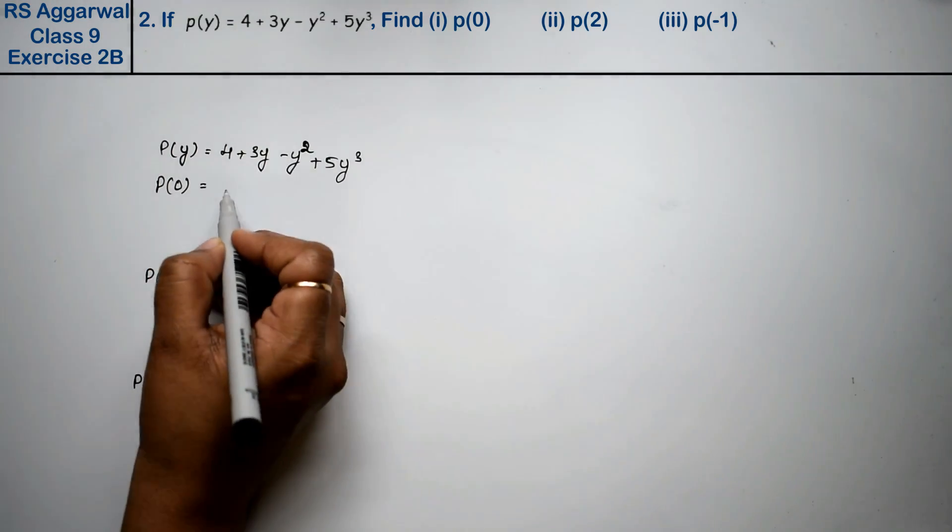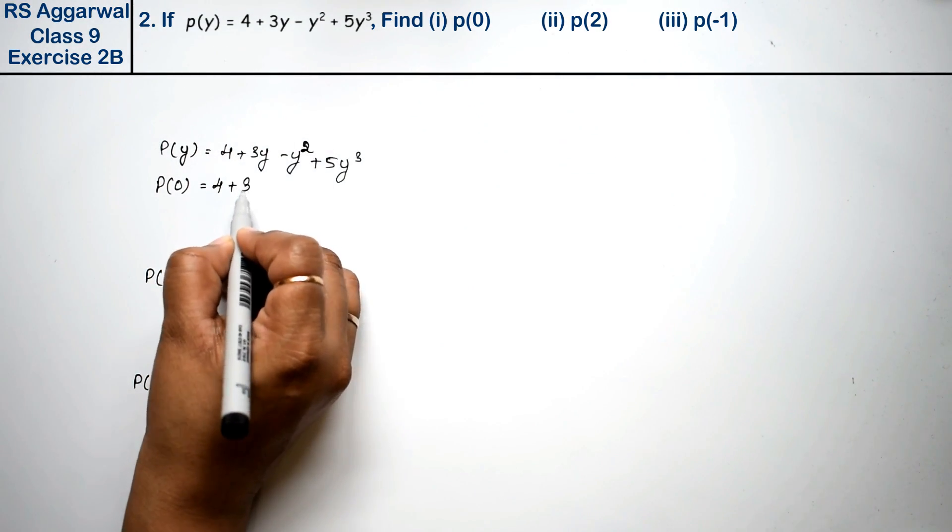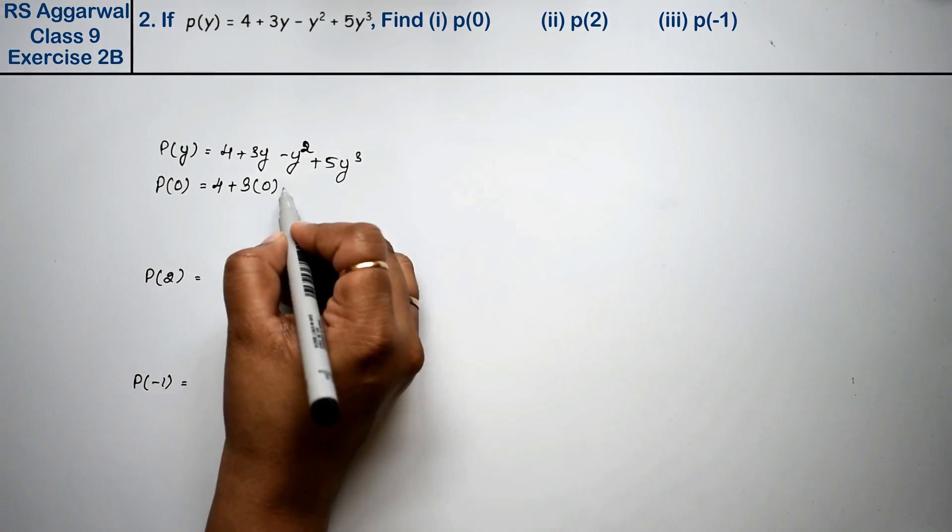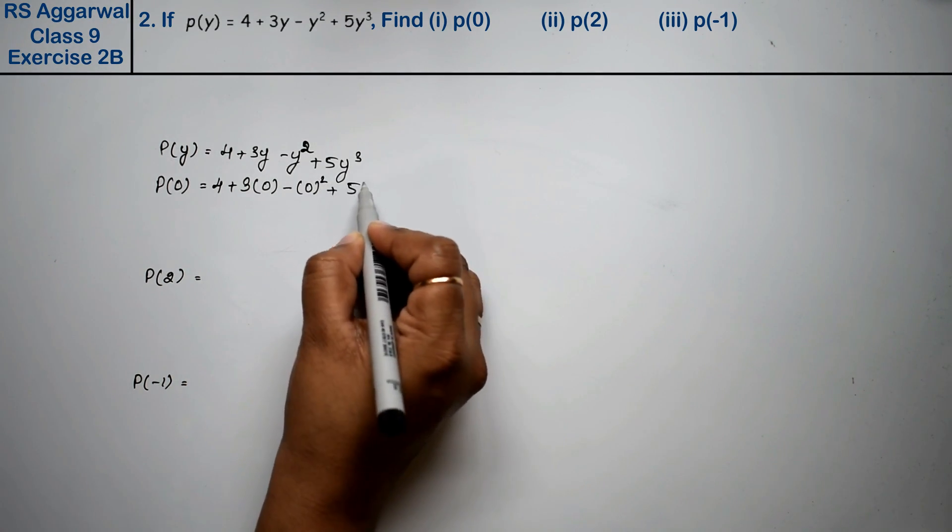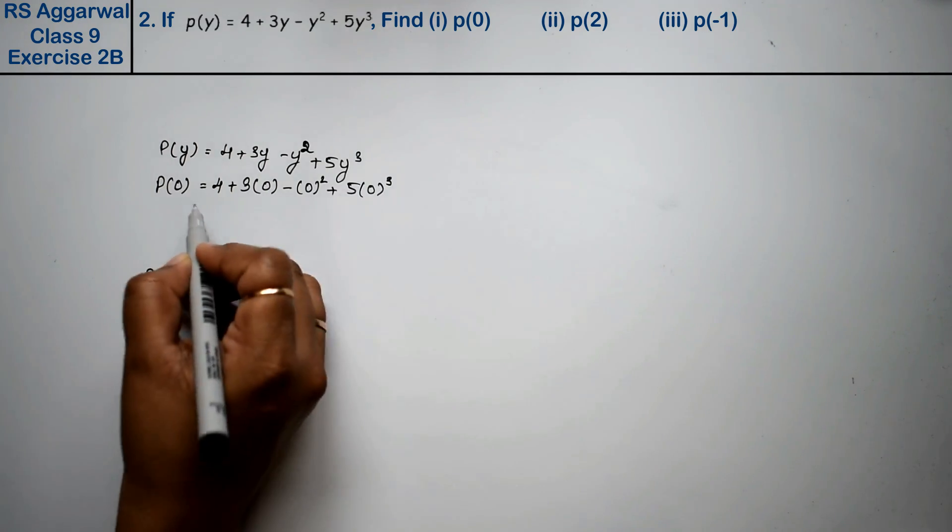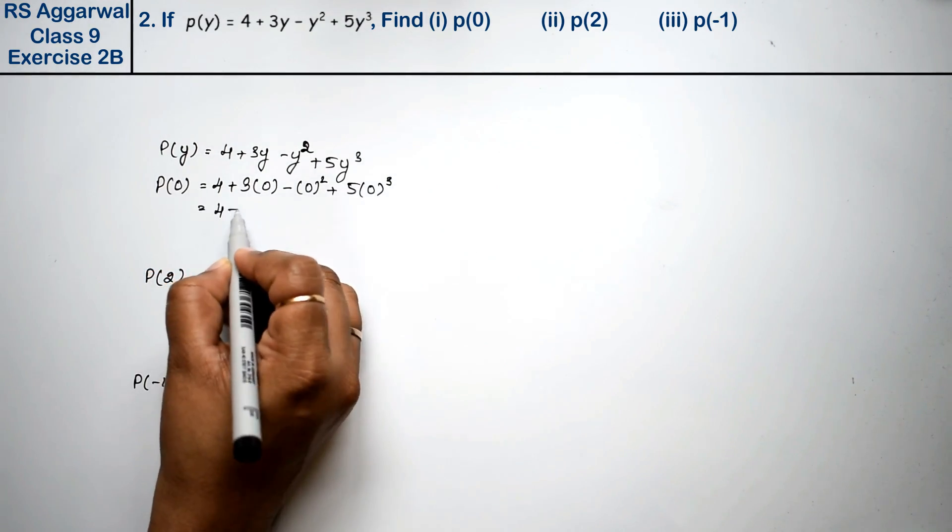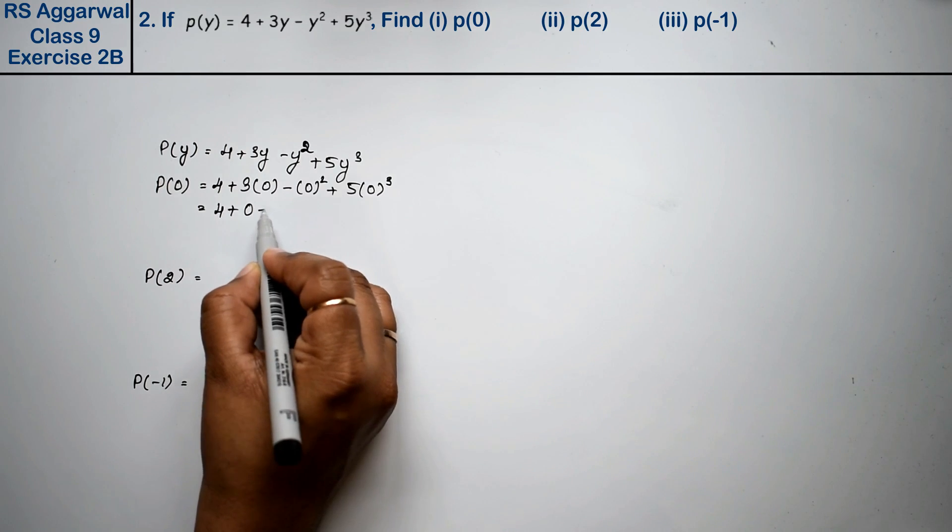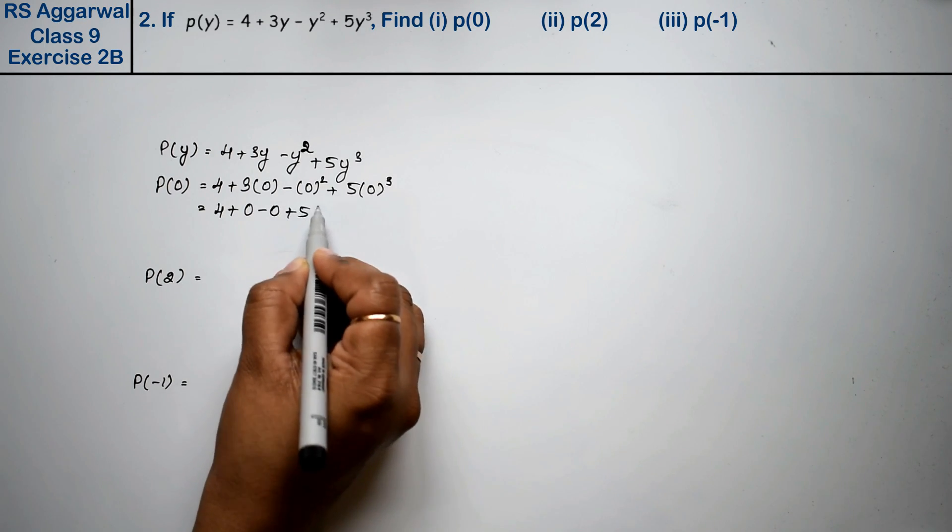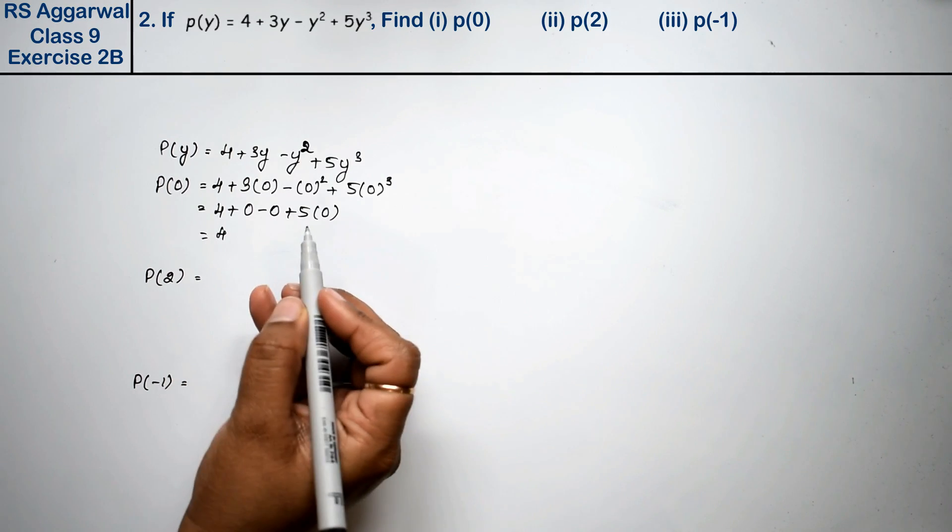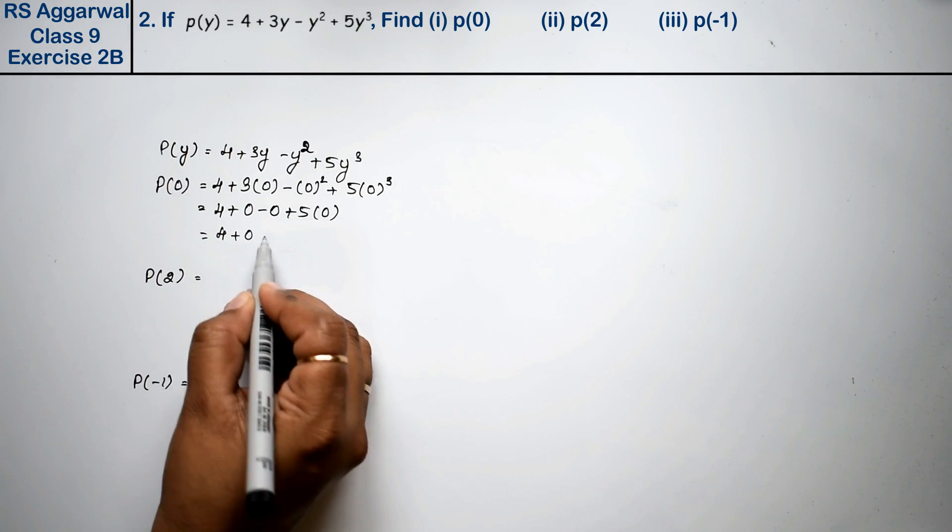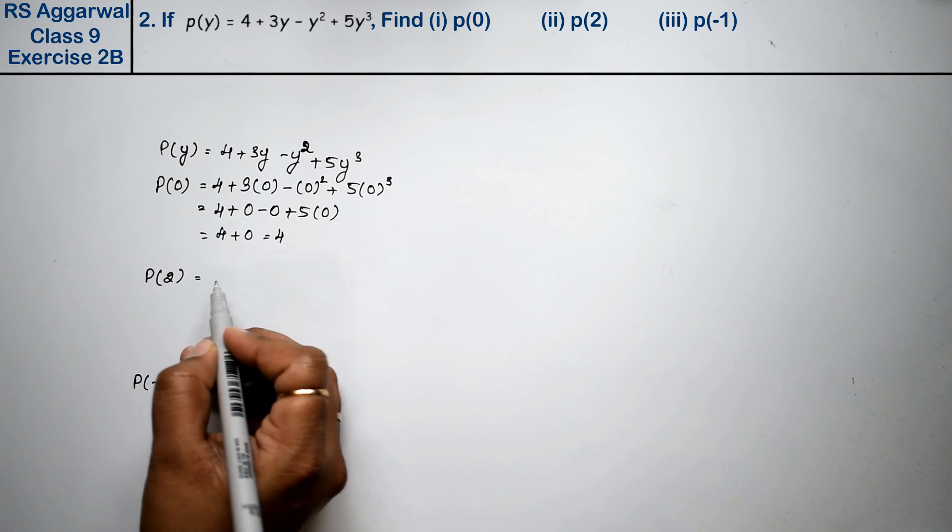Right friends. So now for p(0) we will put y equals 0: 4 plus 3 into 0 minus 0 squared plus 5 into 0 cubed. So how much is it? 4 plus 0 minus 0 plus 0. So the answer is 4.